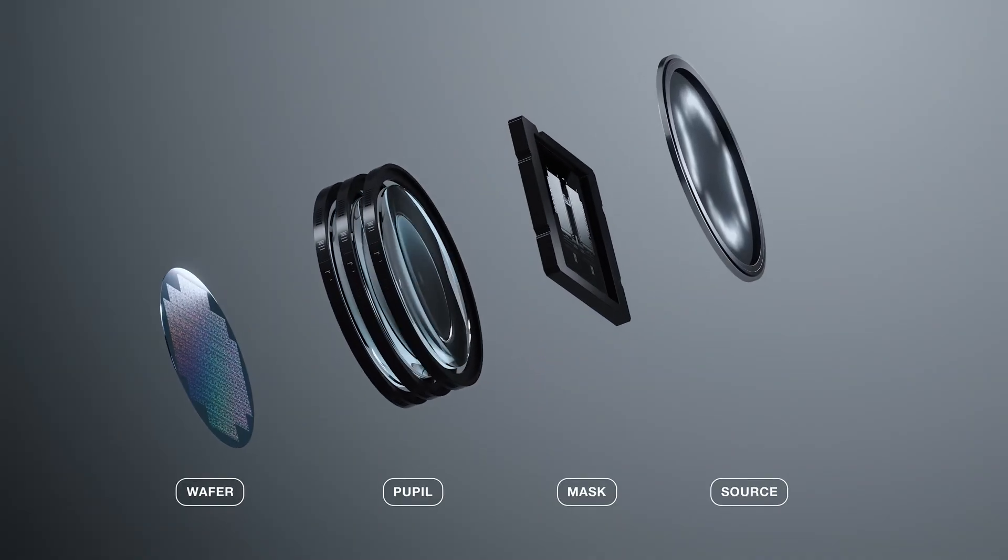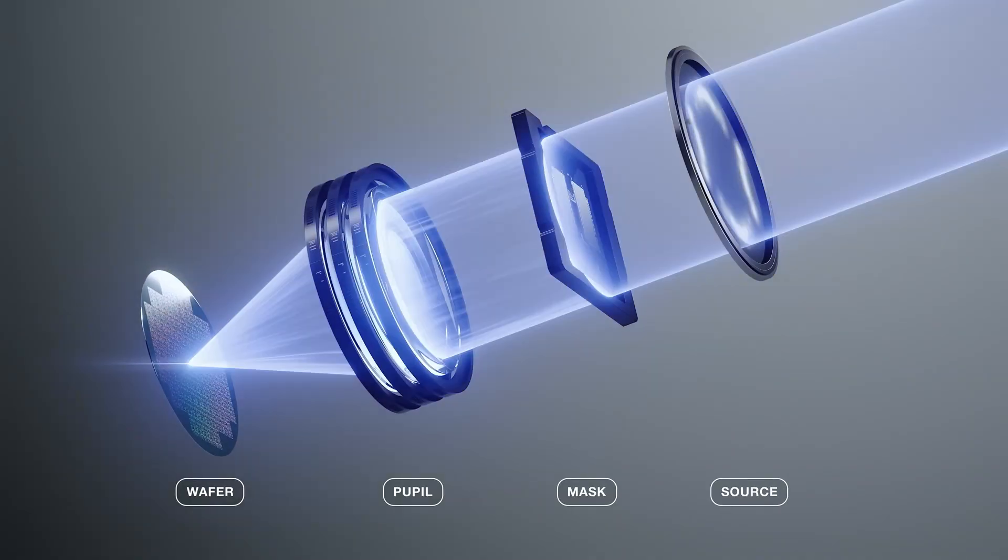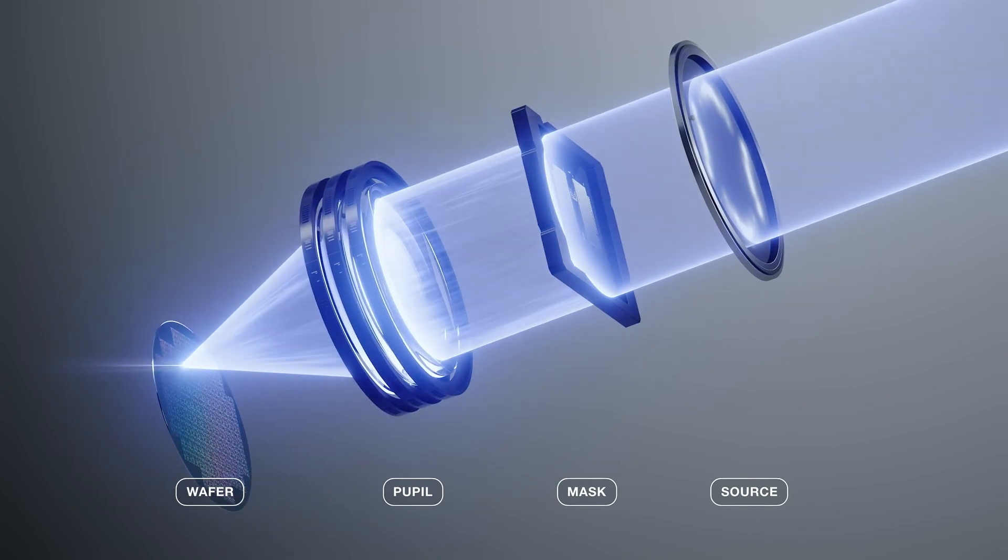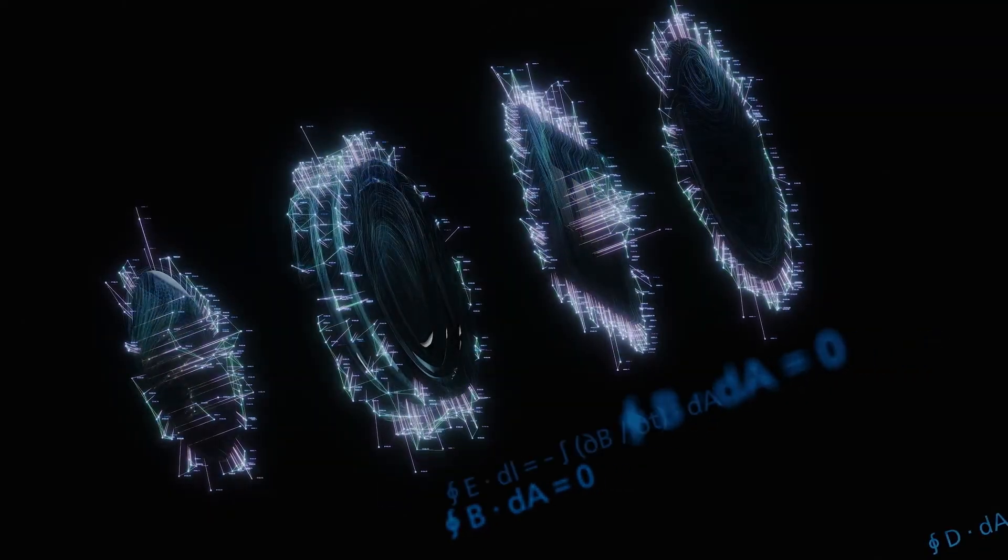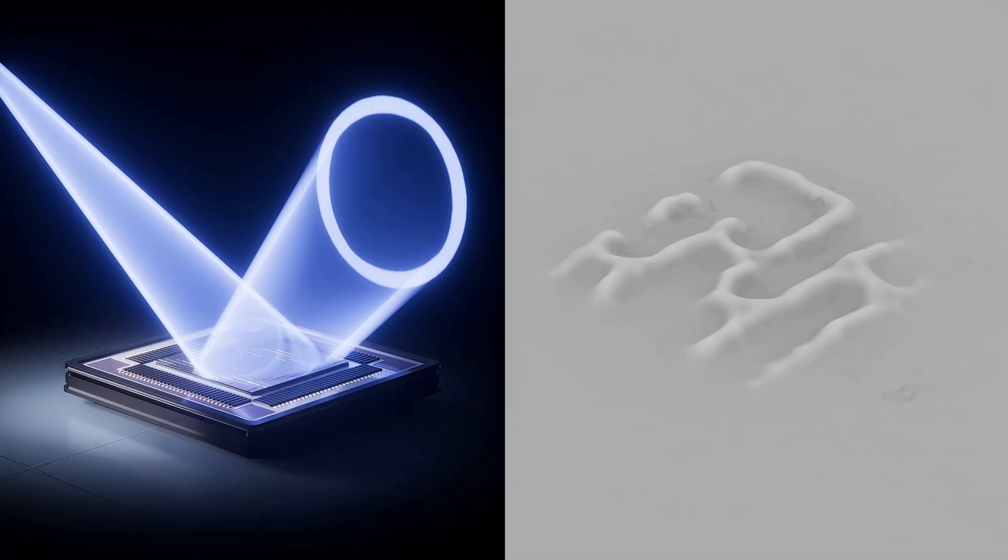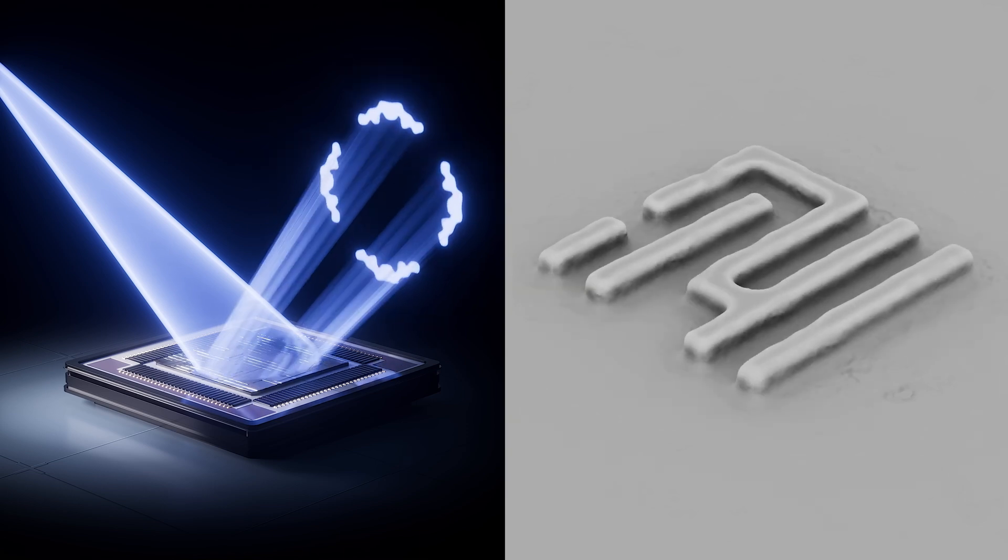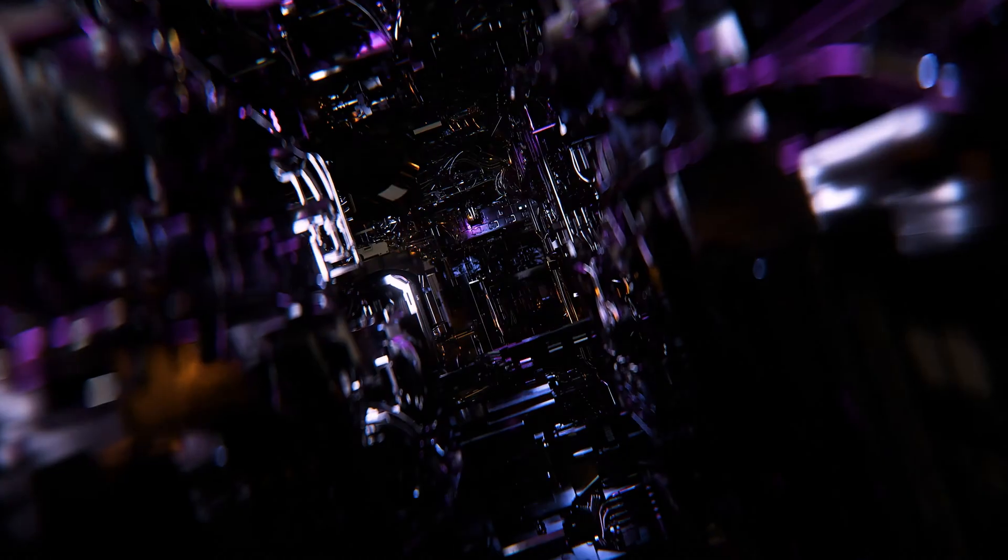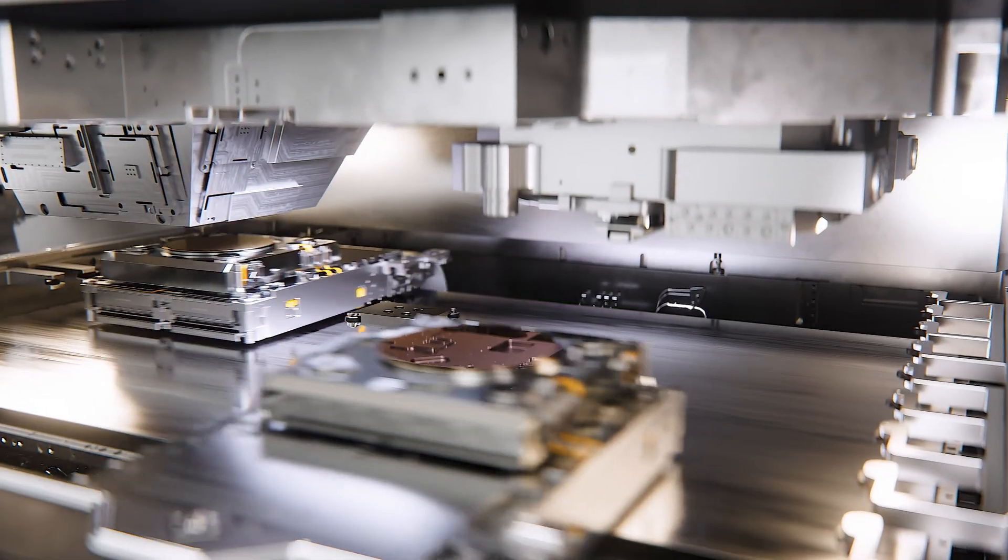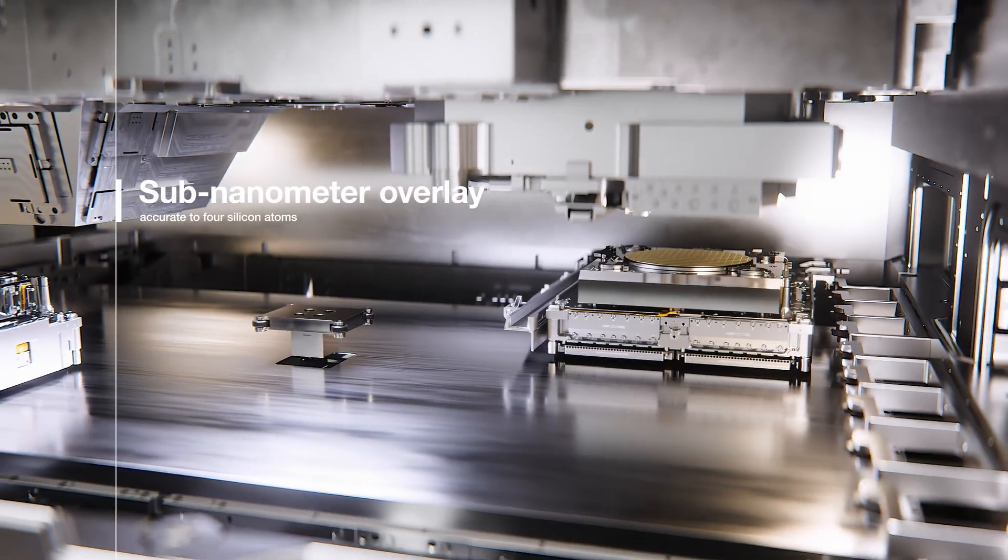Extreme ultraviolet light like this is absorbed by almost anything, meaning that the whole system needs to be under vacuum. The mirrors that are used to direct and control the light need to be extremely precise, too—hence why Zeiss makes them. German precision and all that, right? These are the flattest surfaces in the world, and they need to be to actually bounce the UV light rather than just absorb it.